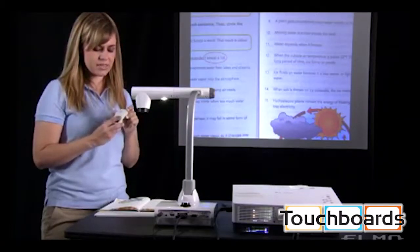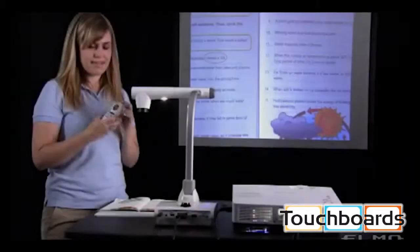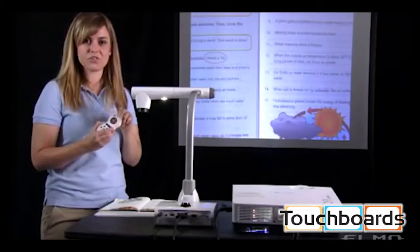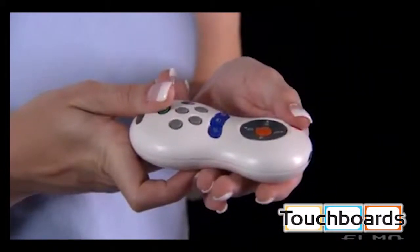You will insert the two AAA batteries that came with the camera in the back, and then you'll be able to power the document camera on and off by pressing the red power button.